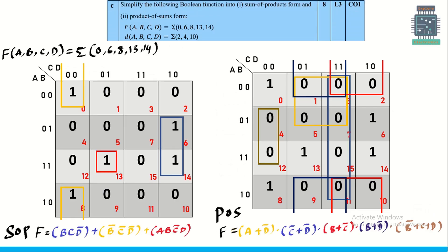The next question asks to simplify the boolean function into SOP (Sum of Products) and POS (Product of Sums) form. For the first expression f(A,B,C,D) = Σ(0,6,8,13,14), to get the SOP we put 1s in the K-map at the given minterms and group them together. For POS, for the same values we group zeros and write it as product of sums.